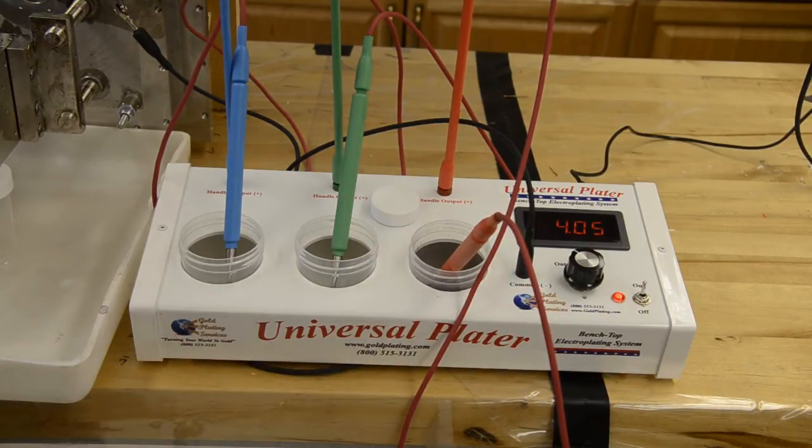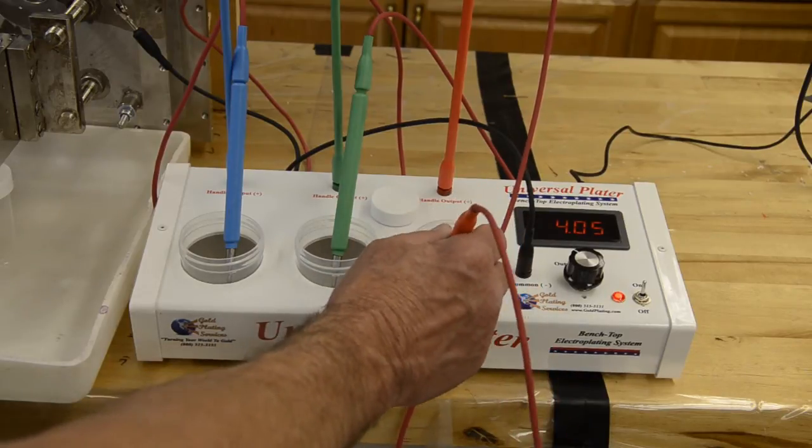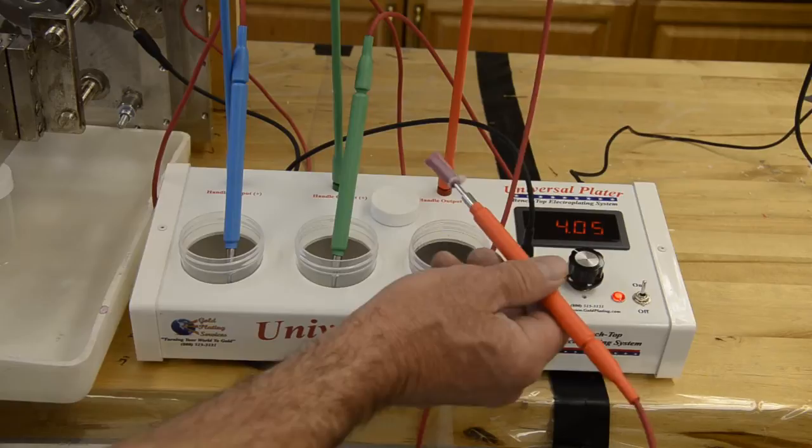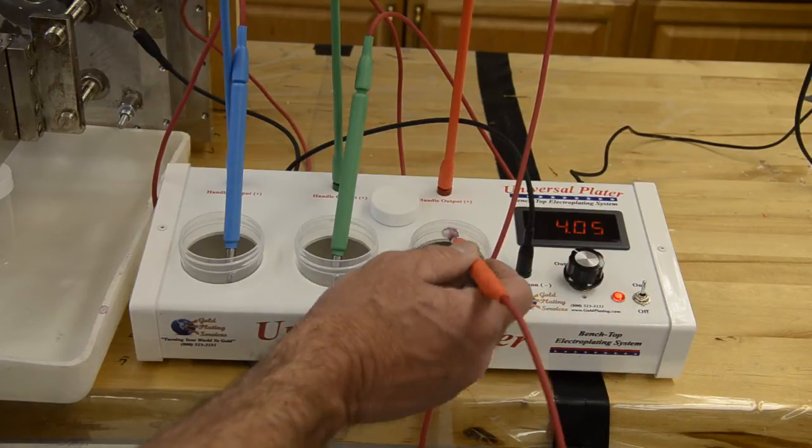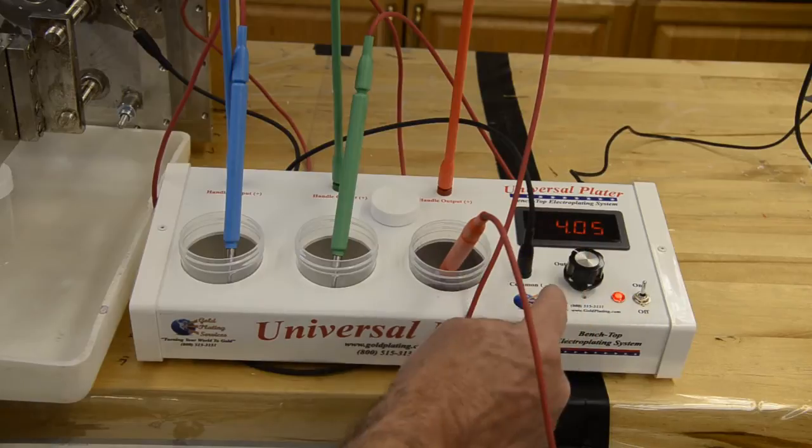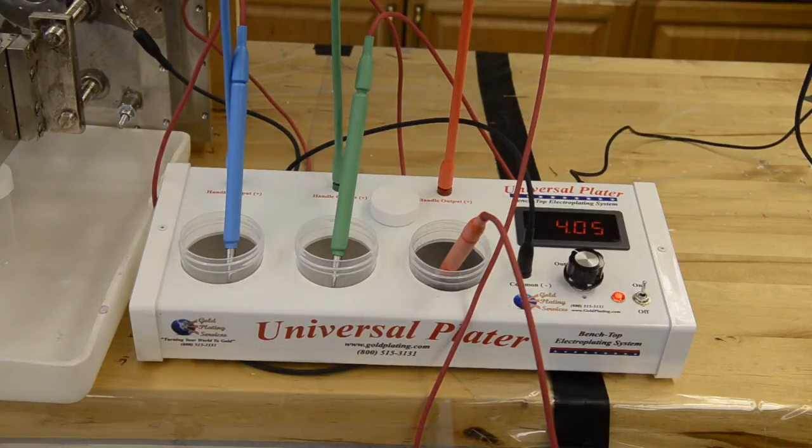Now since we've already done the plating on this piece, right now we're just finishing the plating up and we have the gold solution in here. We're using our 24 karat cobalt hardened gold and we're going to start with a plating voltage of about four volts. We've taken the common lead and connected it to the body of the assembly.